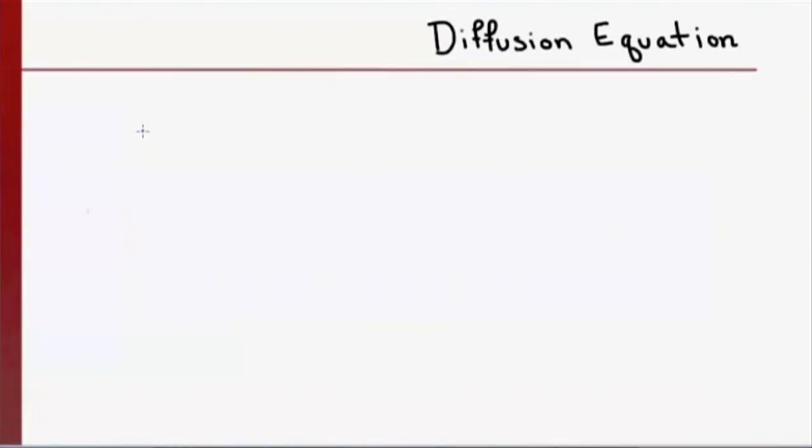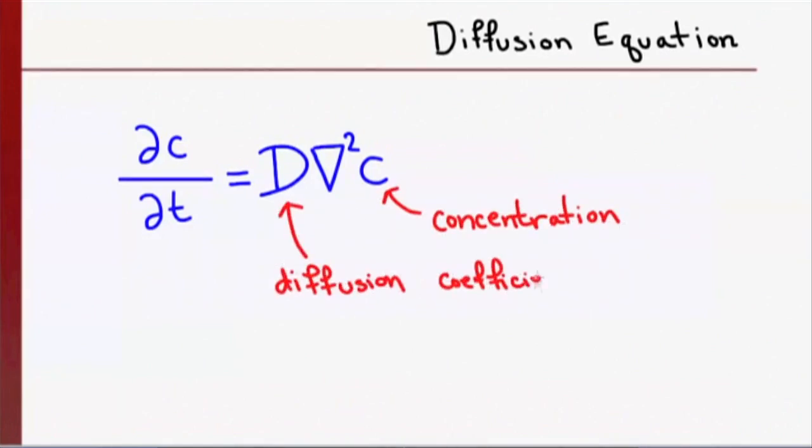The equation that describes diffusion is the partial derivative of C with respect to time is equal to D del squared C, where C is concentration and D is the diffusion coefficient, which we will assume is a constant. But where does this come from? Well, in order to understand this completely, we will need to combine the divergence and gradient to have a full description of the del squared term. In this video, our goal is to understand how flux is related to the gradient of the concentration.